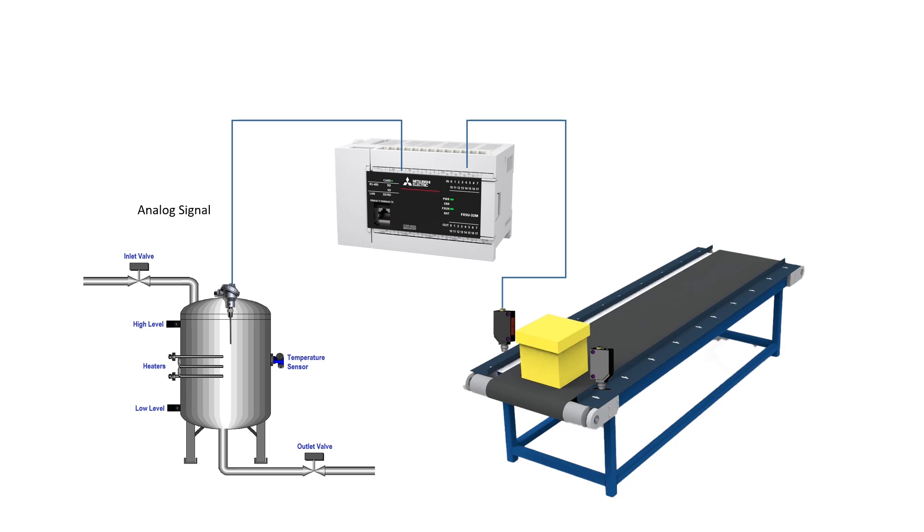Another example is detecting the presence of a package on a conveyor belt. A photoelectric sensor is used in this case. The signal received by the PLC can only have two possible values, present or not present. This is a digital signal. Later, we'll discuss in detail how a PLC identifies digital signals.